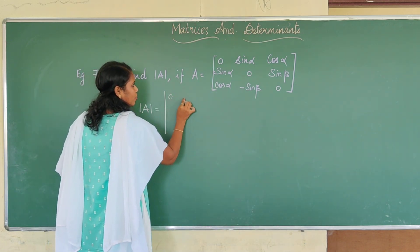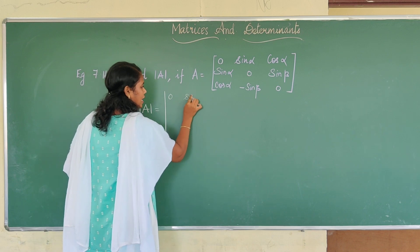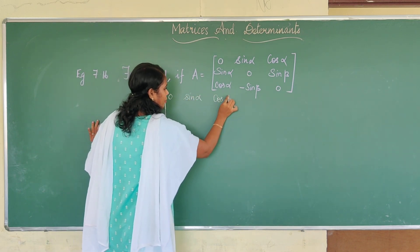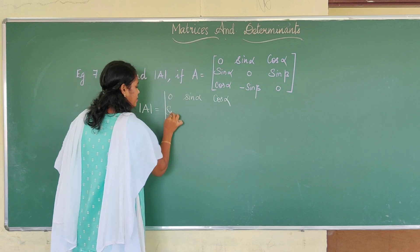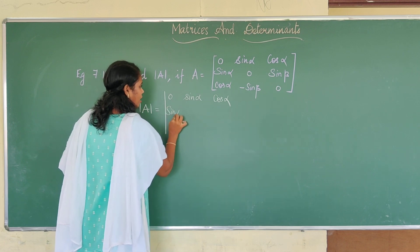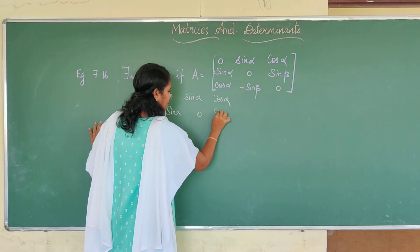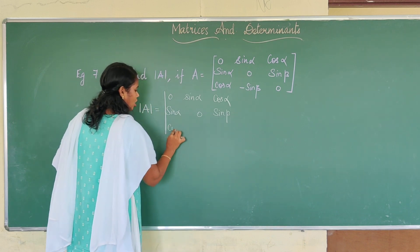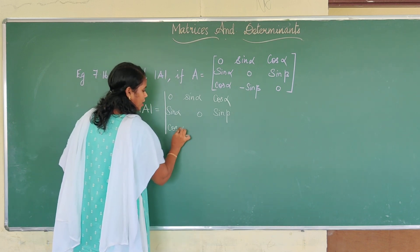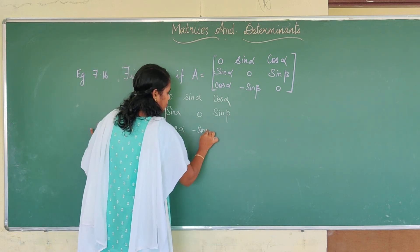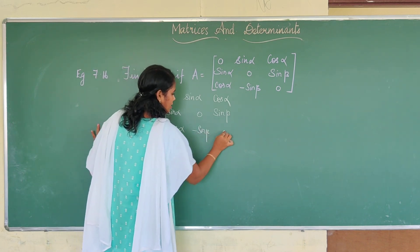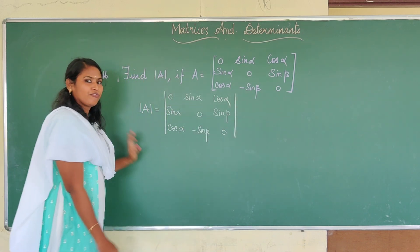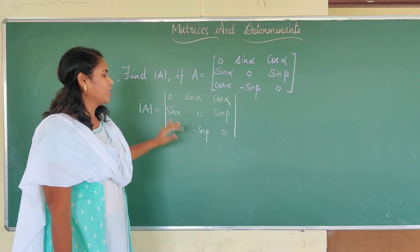First row, I have 0, sin alpha, and cos alpha. Second row, I have sin alpha, 0, sin beta. And third row, I have cos alpha, minus sin beta, 0. And now we are going to find the determinant value.